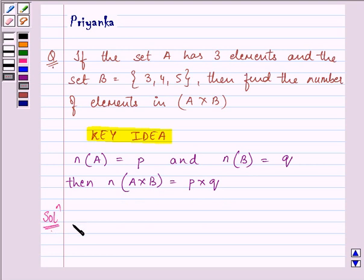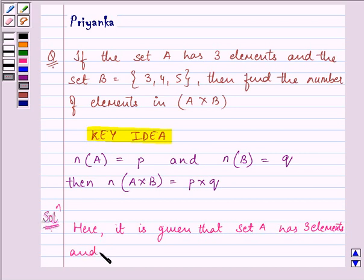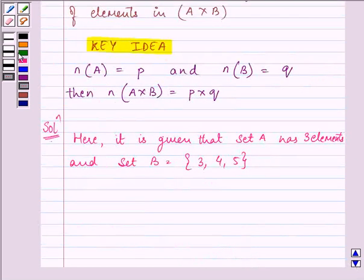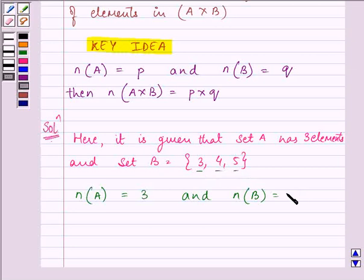Here it is given that set A has three elements. And set B has elements that are 3, 4, 5. So, number of elements in set A is equal to 3 and number of elements in set B is equal to 3 again.